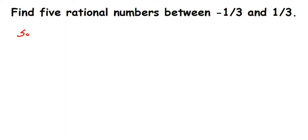Now, in some questions you have to take LCM to make denominators the same. But here all denominators are already 3, so we don't need to take LCM or change anything. Now I'm going to find the equivalent rational number for minus 1 by 3.